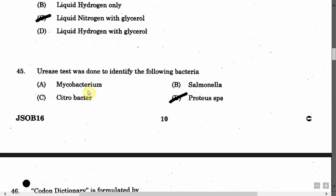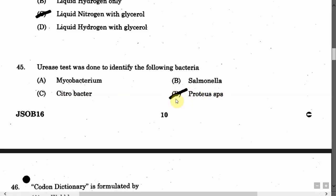The next question is: Urease test was done to identify the following bacteria — Option A: Mycobacterium. Option B: Salmonella. Option C: Citrobacter. Option D: Proteus species. The correct answer is Option D, that is Proteus species.